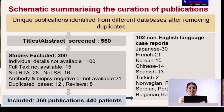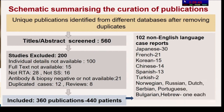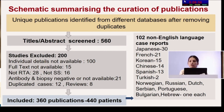The curation schematic identified unique publications from different databases; duplicates were removed, giving 560 abstracts screened. After excluding 200 studies, 360 publications remained, yielding information on 440 patients with both Sjogren's syndrome and renal tubular acidosis. There were 102 non-English language case reports, mostly Japanese, French, Korean, Chinese, Spanish, and Turkish.